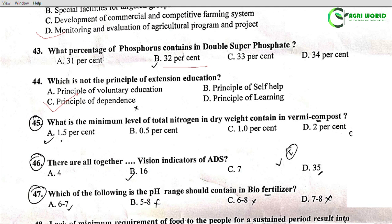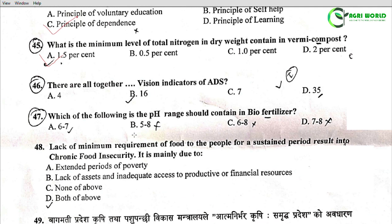Question 45: What is the minimum level of total nitrogen in dry weight contained in vermicompost? Options: 1.5%, 0.5%, 1%, 2%. The correct answer is 1.5%. Question 46: There are altogether how many vision indicators of ADS? Options: A - 4, B - 16, C - 7, D - 35. The correct answer is Option B: 16.